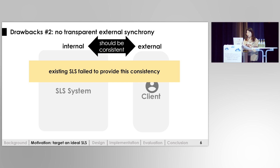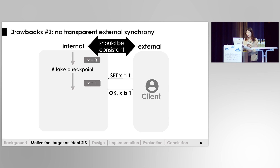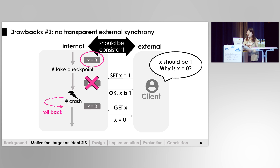Second, existing single-level storage fails to provide external synchrony. When we say external synchrony, we are referring to the consistency between the internal world and the external world. Modern applications heavily rely on this to provide services to external entities like a client. However, existing checkpoint-based single-level storage fails to provide this consistency. For example, if an external client sends a request like 'set X to 1', the system sets the value of X to 1 and sends a response to inform the client that the request has been applied. However, upon a crash, the system rolls back to the previous checkpoint where X equals 0, causing confusion to the external client as the state is lost.